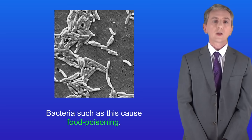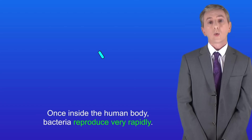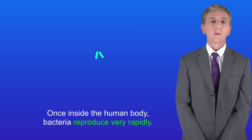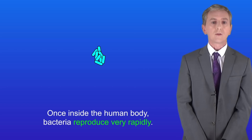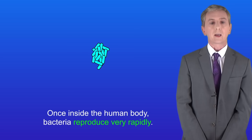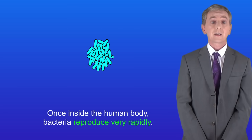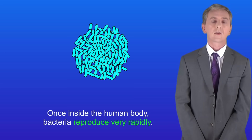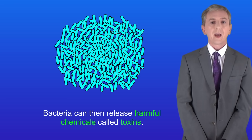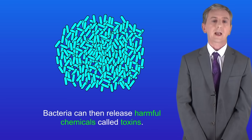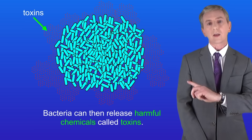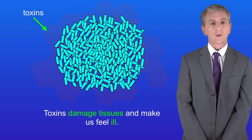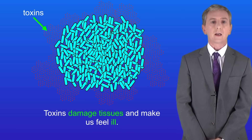So how do bacteria make us ill? Once inside the human body, bacteria reproduce very rapidly. Under ideal conditions bacteria can divide every 20 minutes. Bacteria can then release harmful chemicals called toxins, which damage tissues and make us feel ill.